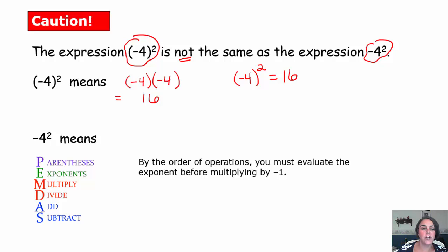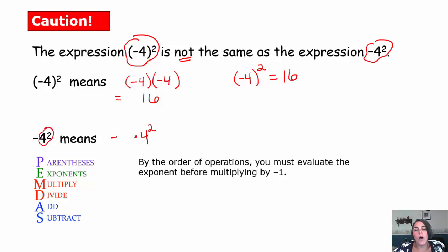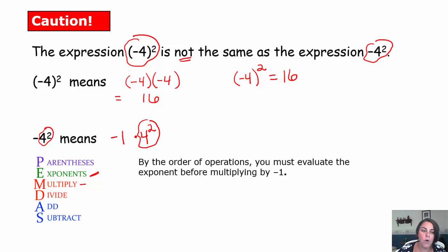The second expression — negative and then 4 to the second power — because there are no parentheses, the exponent of 2 is only attached to the 4. It means negative times 4 to the second power. A negative what? Well, you can assume it's a negative 1. So it means negative 1 times 4 to the second power. Based on our order of operations, we need to take care of the exponent — 4 to the second power — before we ever multiply by this negative 1.